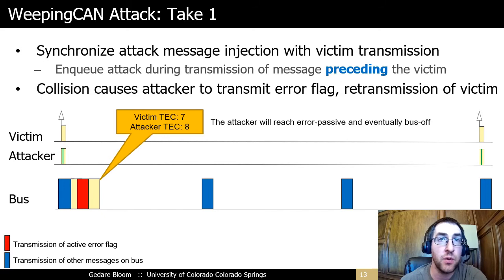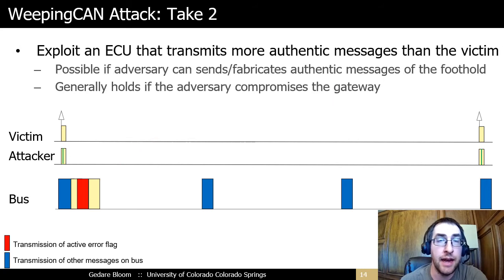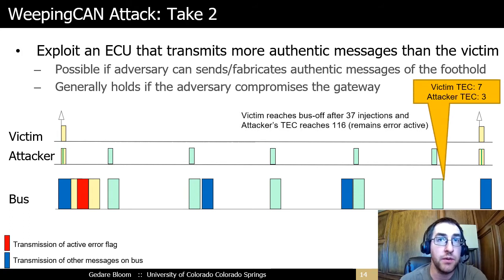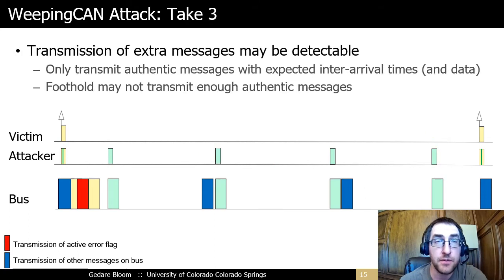Unfortunately, this first approach does not quite work, because the attacker's TEC increases faster than the victim's. A simple workaround is to identify an ECU that transmits enough messages between injections to allow the attacker to recover its TEC more than the victim. Suppose the attacker's ECU transmits five authentic messages for every one of the victim messages — the attacker will recover five TEC between each injection, meaning for each injection the victim's TEC will increase by 7 and the attacker's will increase by 3. Eventually, the victim will reach bus-off. It may not always be possible to establish a foothold on an ECU that transmits enough messages for the attack to succeed.